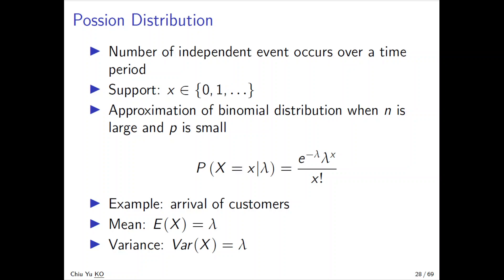It's like a time period divided into n small parts, where n is divided into very small time periods, and the experiment success rate p is very small. So it's still a discrete thing — the values go from 1 up to infinity, so it can be any integer. The approximation is a binomial distribution where n is large and p is small.